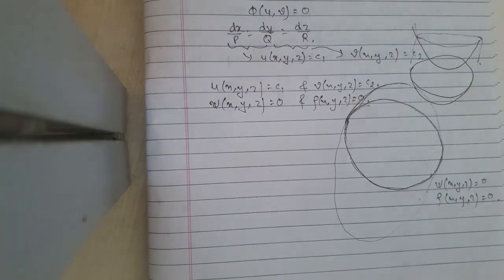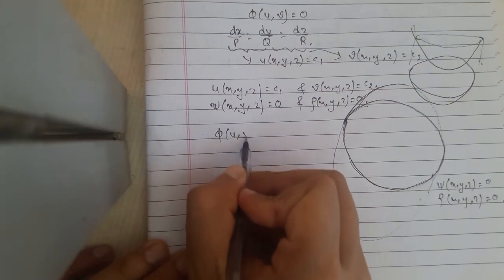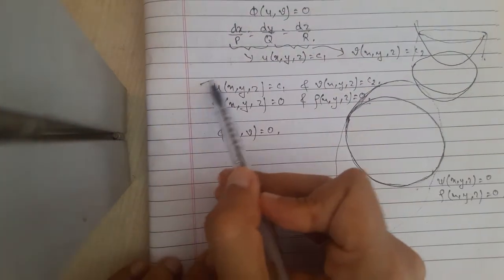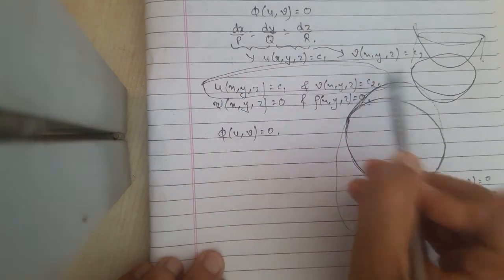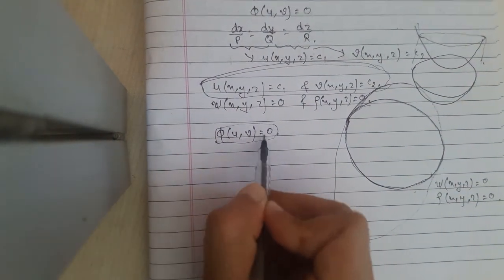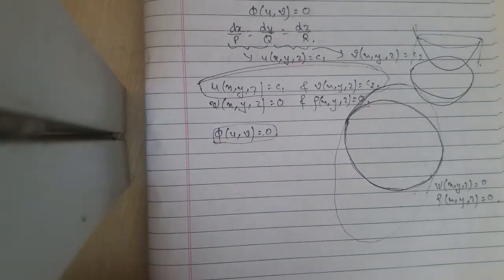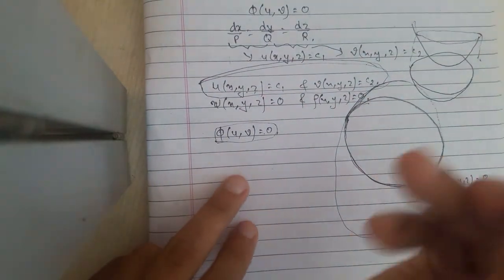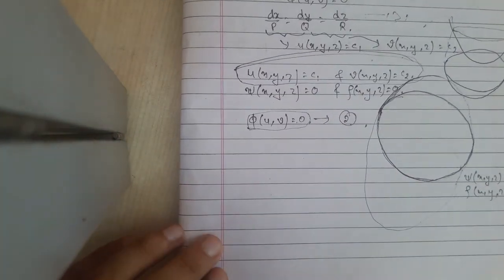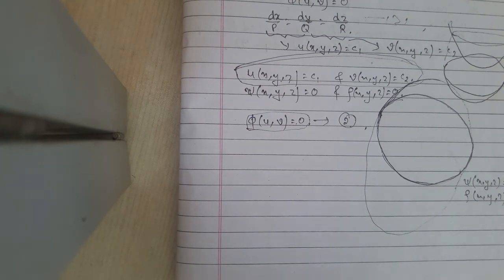So if we want to find the whole surface, we can write it by eliminating x, y, z as φ(u,v) equals 0. This is the same as equation 2. After showing all of this, we can say that we have proved Lagrange's theorem. Thank you.